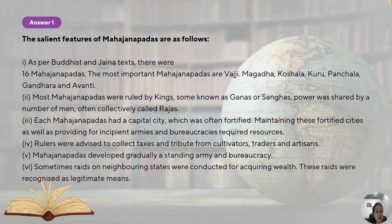Most of the Mahajanapadas were ruled by kings, and some were known as gana or sangha, where power was shared by a number of men who were collectively known as rajas. Some of the Mahajanapadas were ruled by kings and some of them were oligarchies — you can find the primitive form of republic in those Mahajanapadas, with Vajji being an example.